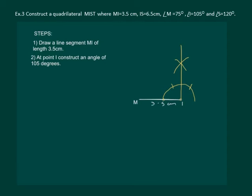If we join I with the second point of intersection of the arc with the curve, we get a 120 degree angle. Now it remains to bisect this angle so that we get a 105 degree angle. So let us do so.